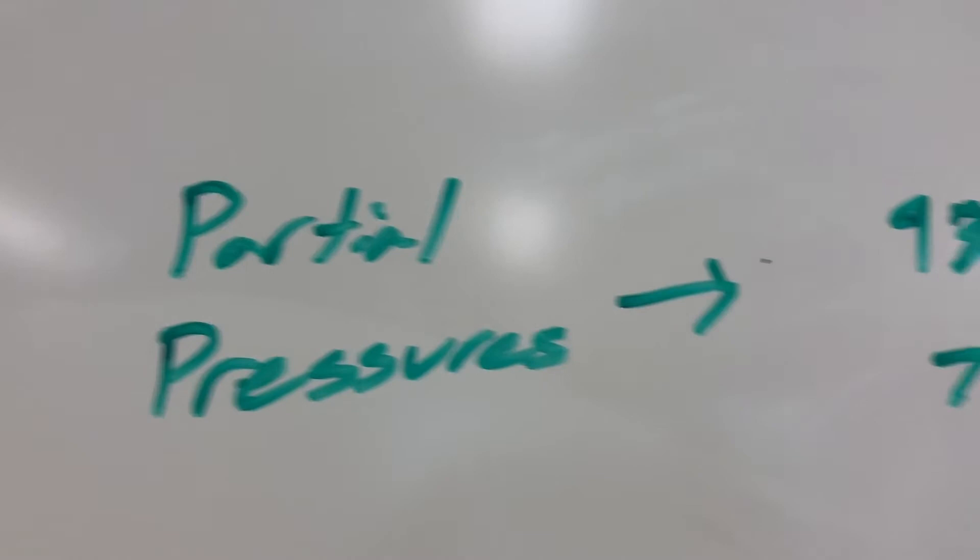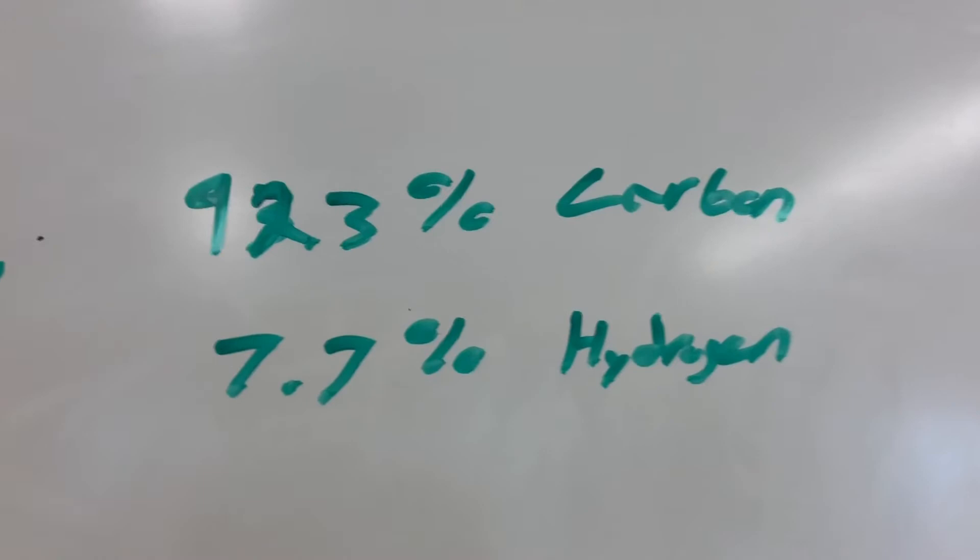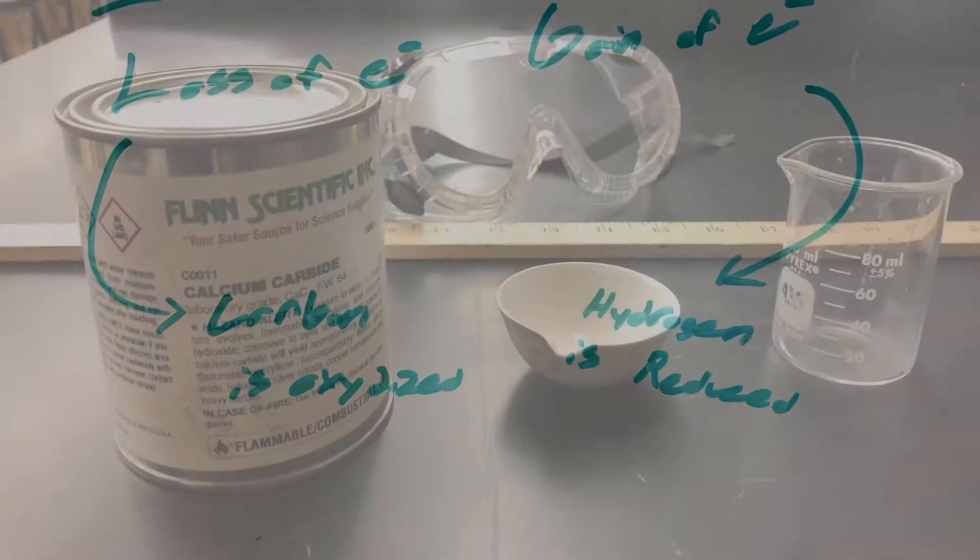Acetylene, a fuel used for welding torches, is comprised of 92.3% carbon and 7.7% hydrogen. Carbon is oxidized, hydrogen is reduced.